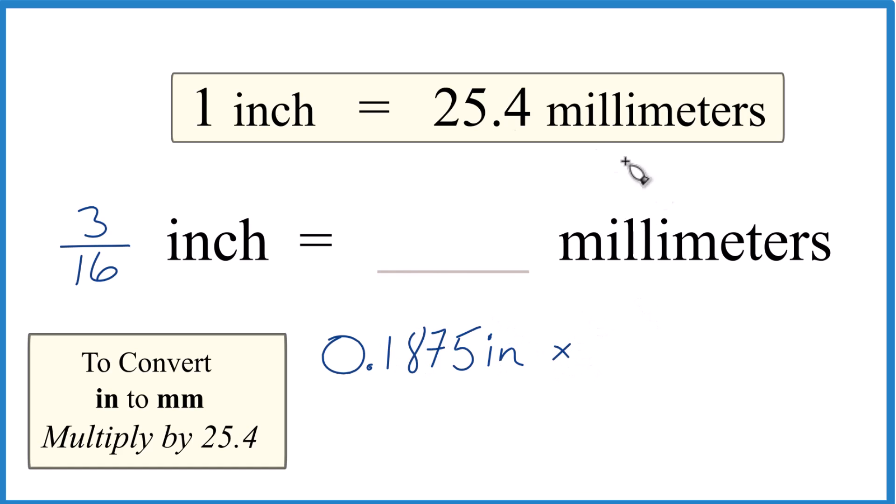Then we multiply it by that 25.4 millimeters. And remember that's 25.4 millimeters in one inch per inch. So that's a conversion factor. That way, when we multiply, we have inches on the top and the bottom that cancel out. So we know we did it correctly.